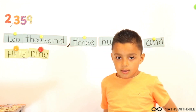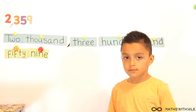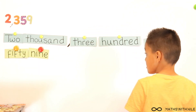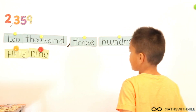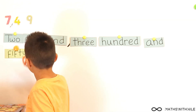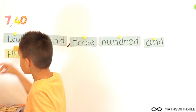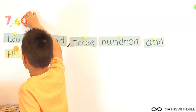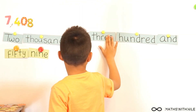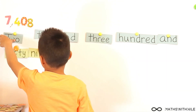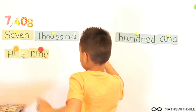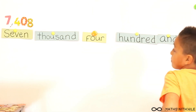Okay, we're going to do one more four-digit number, then we'll go on to our quiz. So let's do seven, four, zero, eight. 7,408. So how do you say it? Seven, four, zero, eight — 7,408.